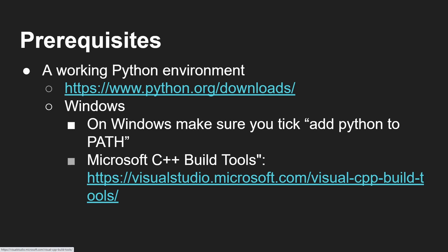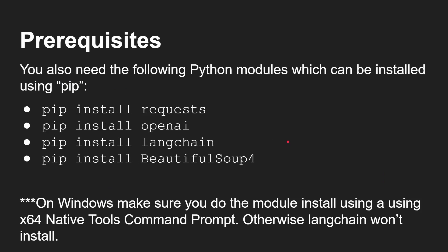To install one of the modules we're going to mention in a minute, you are going to need Microsoft C++ build tools installed on Windows. Make sure you go to the Microsoft site, download and install that. You're going to need the following Python modules and they can be installed using pip. On Windows, because LangChain needs to do some compiling, make sure that you do the module install using an x86 native tools command prompt, which is what you get when you install those Microsoft build tools. Otherwise LangChain won't install. On Linux that shouldn't be a problem.